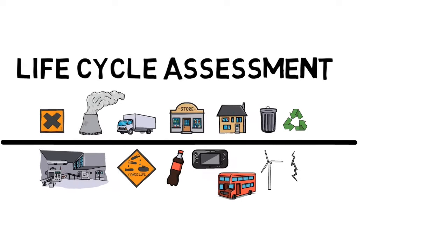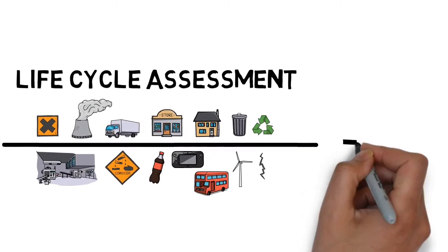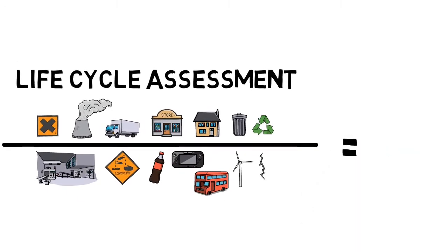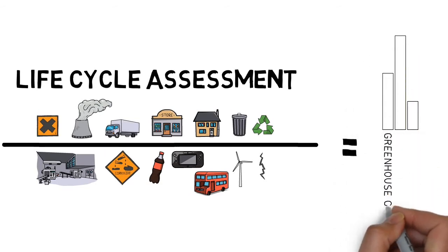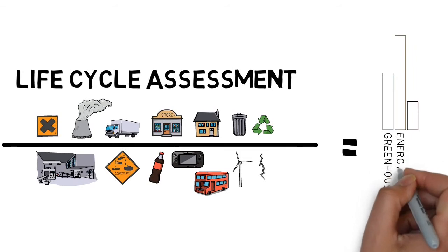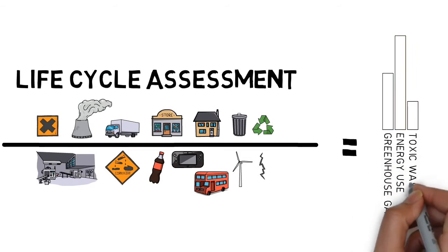Once we can draw a full timeline for a material, we can look at the data for each point in the timeline and start to total up the environmental impacts for that material. These impacts can then be sorted into groups to help us consider things like greenhouse gas emissions, energy use, and effects on human health.